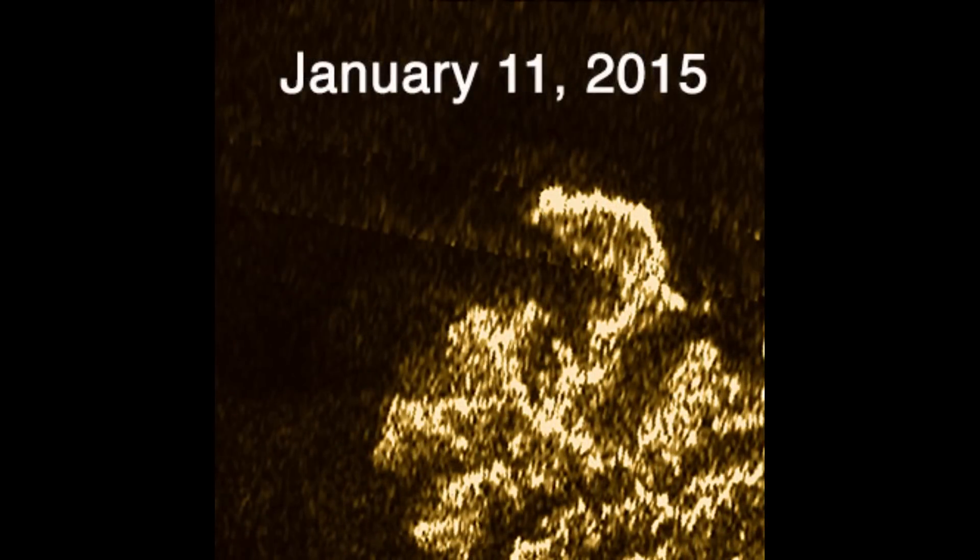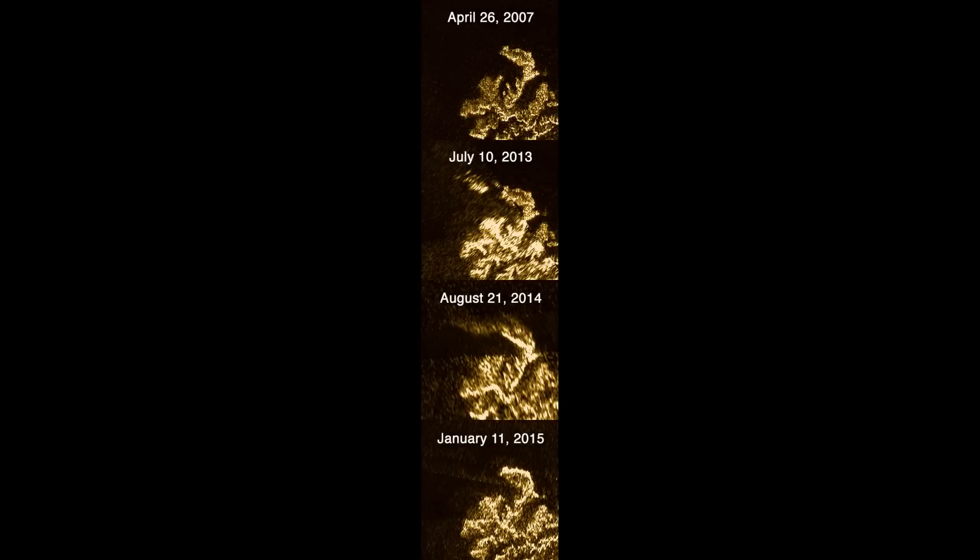Then a photo taken five months later in 2015 showed that no bright features were present. All of these photographs were taken by NASA's Cassini spacecraft.